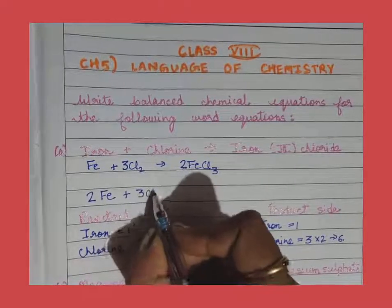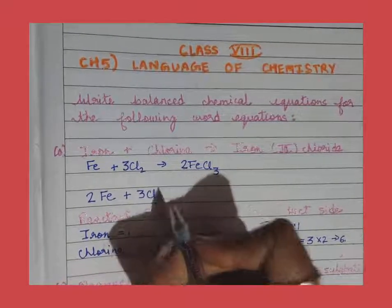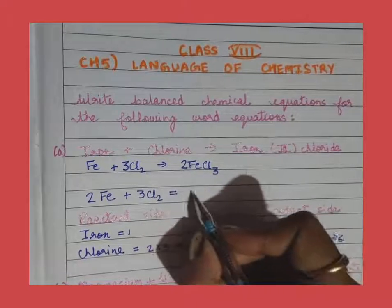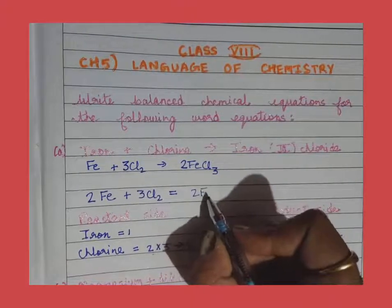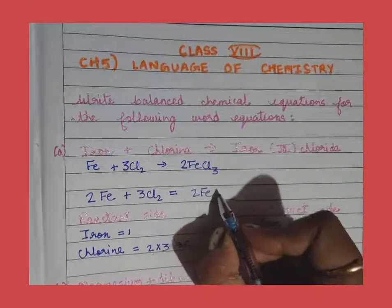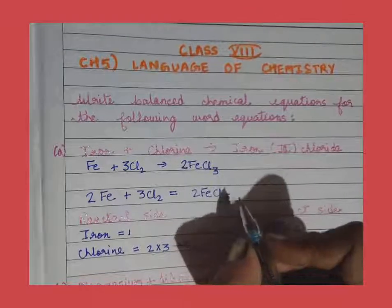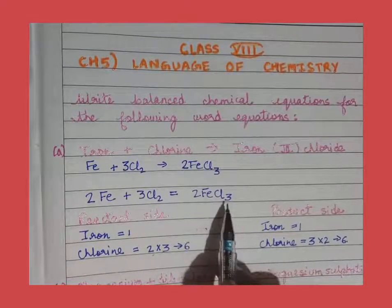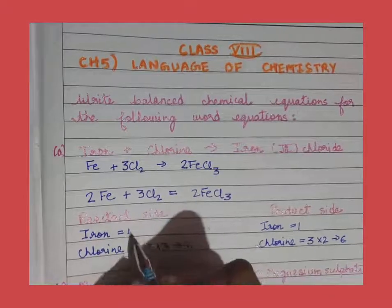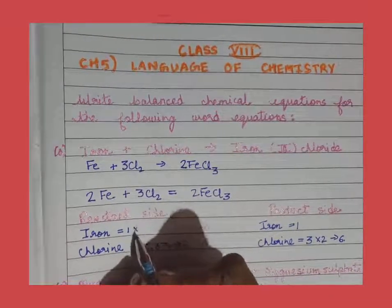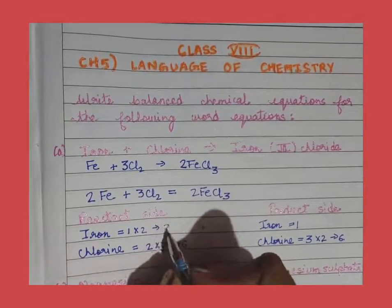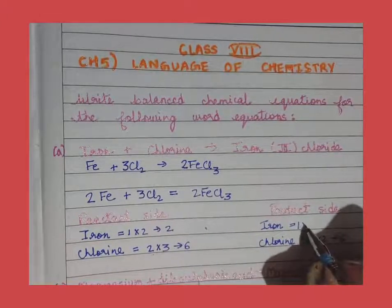After balancing the equation, we can put the sign of equality, because according to the law of conservation of mass, atoms can neither be created nor be destroyed in a chemical reaction. Hence the law of conservation of mass is followed.